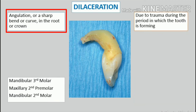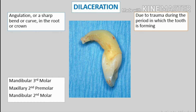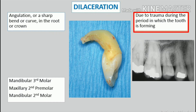Dilaceration. The term dilaceration refers to an angulation or a sharp bend or curve in the root or crown of a formed tooth. The condition is thought to be due to trauma during the period in which the tooth is forming, with the result that the position of the calcified portion of the tooth is changed and the remainder of the tooth is formed at an angle.